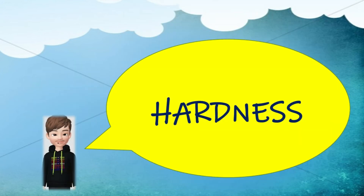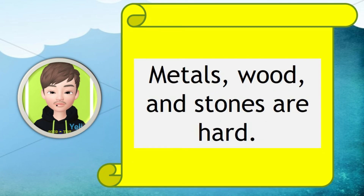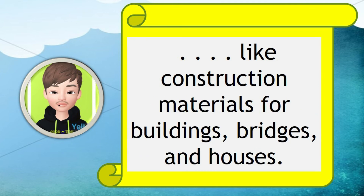Hardness. Hardness is the property of an object that makes it sturdy. Wood and stones are hard. They are used to make things that need to be sturdy, like construction materials for buildings, bridges, and houses.